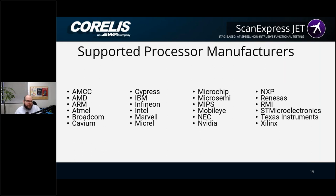Some supported processor manufacturers we've worked with include AMCC with their PowerPC chips, NXP with i.MX and QorIQ series, Texas Instruments with their ARM-based AM and DM series processors, and NVIDIA — we've recently done automotive work with them. We've also done some Renesas R-Car support. Depending on your needs, if we don't have your processor already, you can ask your sales representative and they'll look into it. Sometimes it's similar to something we've already done and requires very little engineering; other times it may be a brand new core that takes some time to develop.